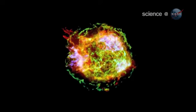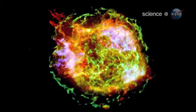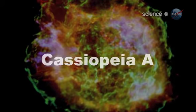The neutron star is spinning inside a supernova remnant astronomers call Cassiopeia A, or Cas A for short.